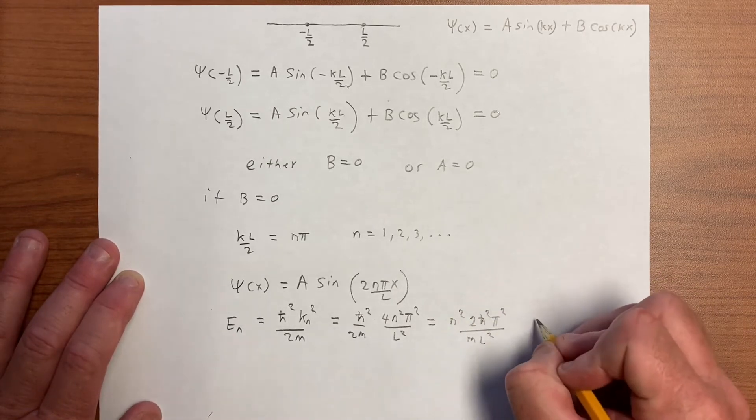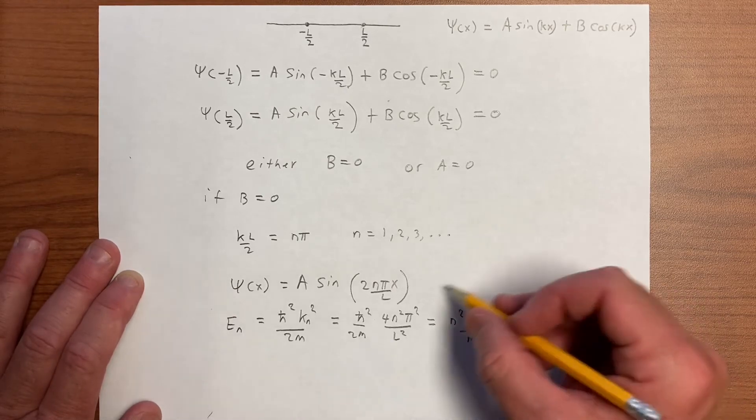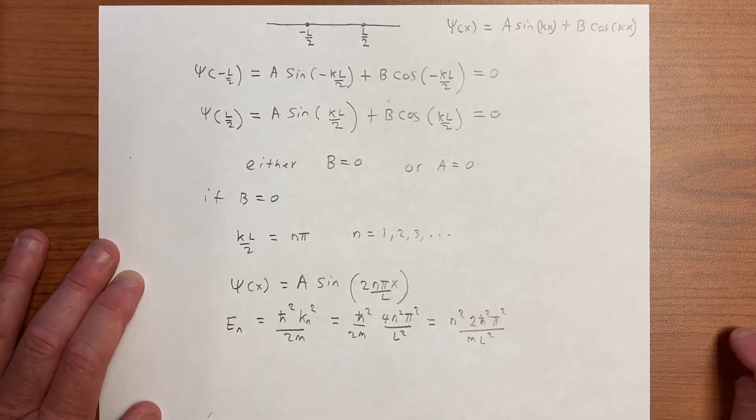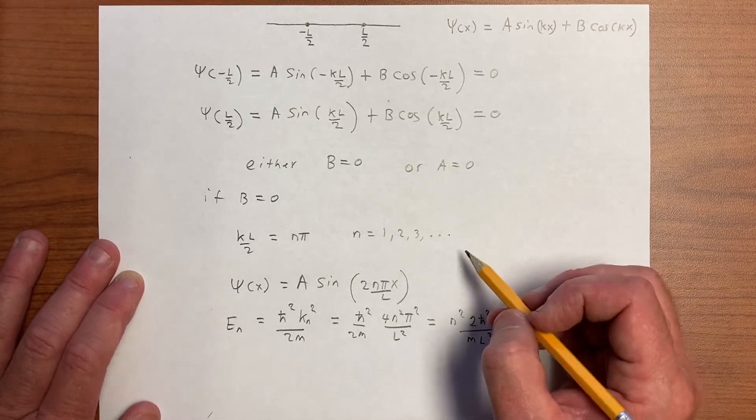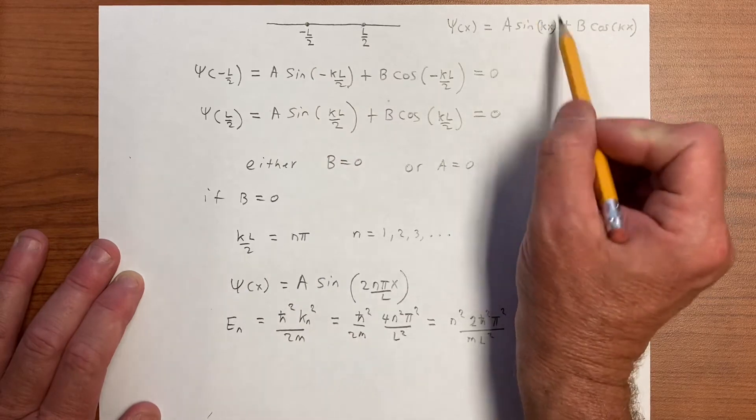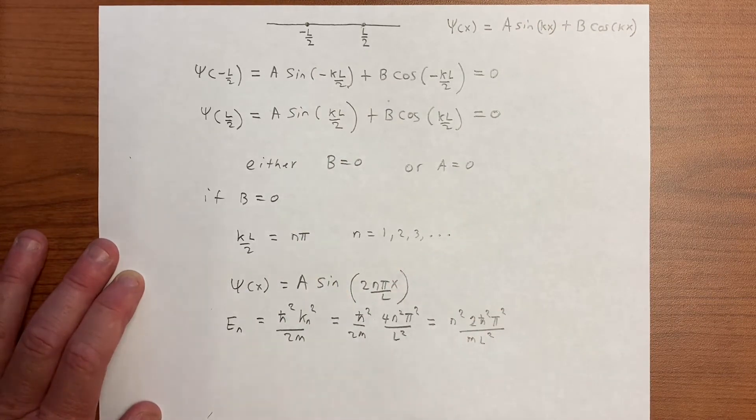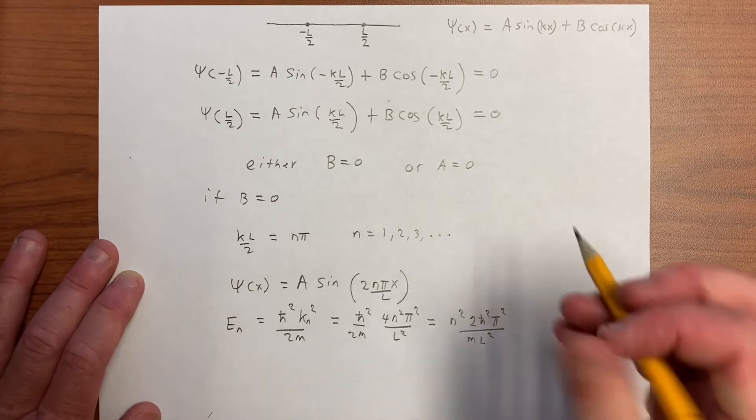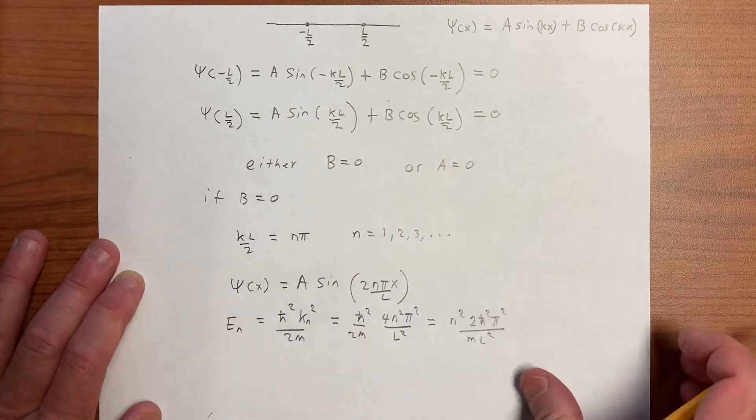What we would see is that by n equals 1, 2, 3, we're not getting all of the energy levels. We're missing half of them, and that's because we're only getting this part. But there's another way of satisfying the equation, and that involves A being 0, so let's do that.